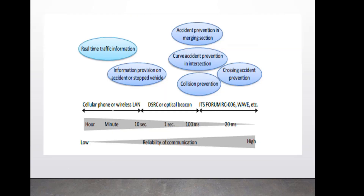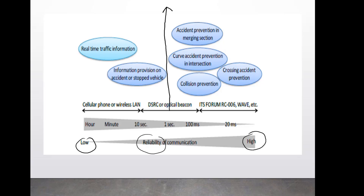Before going into detail, I would like to explain this figure. As you can see, a specific scale is drawn on the X axis representing the reliability of communication. On the right-hand side, reliability is highly important, while on the left-hand side it is less important. I will draw a marginal line so you can understand which information we actually require and in how much time.